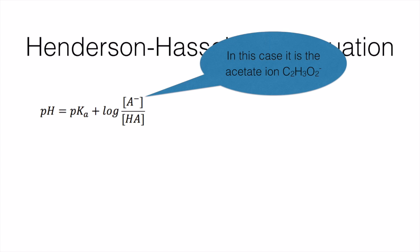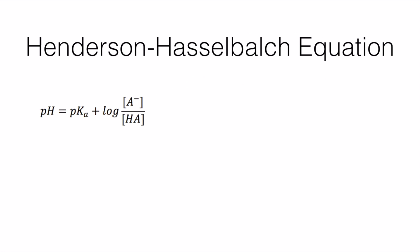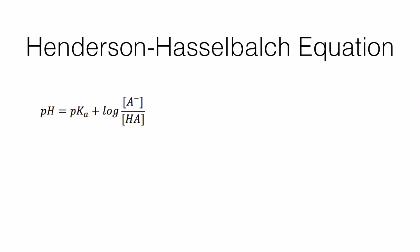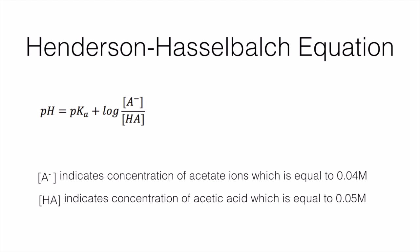In this case, A minus represents the concentration of the acetate ions. HA represents the concentration of the acetic acid. A minus, the molar concentration is 0.04, is the concentration of the acetate ions. And HA represents the concentration of the weak acid, which is 0.05 M.